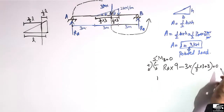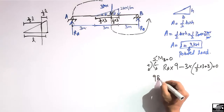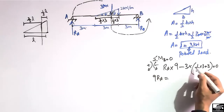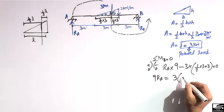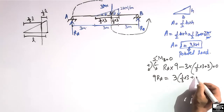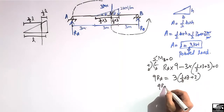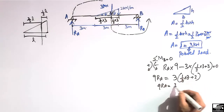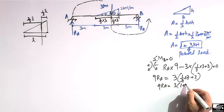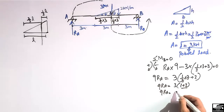Summation of all moments about point B equals zero. So 9Ra equals 3 into (one-third into 3 plus 3). Simplifying: 3 into (1 plus 3) equals 3 into 4 equals 12. So 9Ra equals 12.